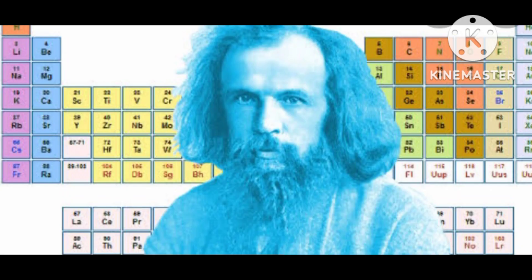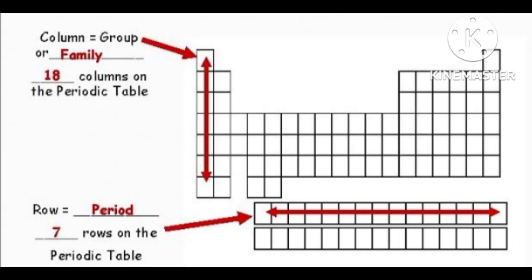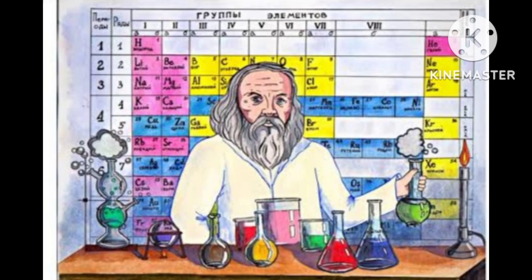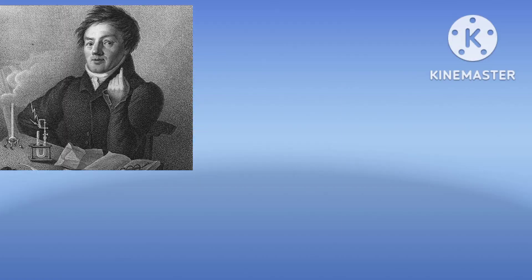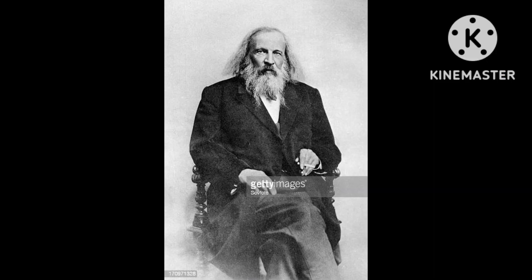Three elements predicted by Mendeleev from the gaps in his periodic table were known as 'Eka' elements. Mendeleev's periodic table was divided into 18 groups and 7 periods. Horizontal rows going from left to right are called periods, and vertical columns going from top to bottom are called groups. The 18 groups can be further divided into 8 groups, labeled 1A, 1B, 2A, 2B, and so on.